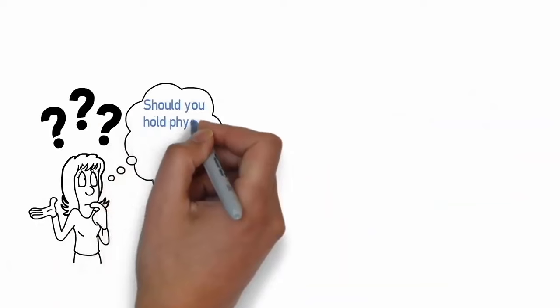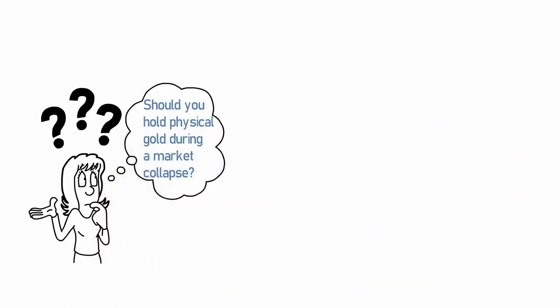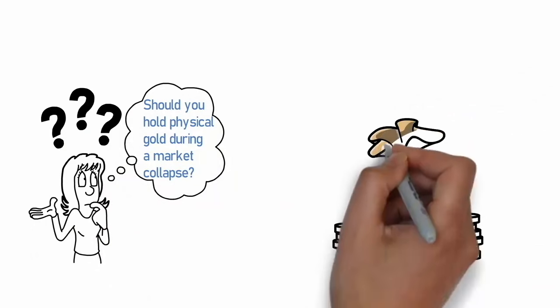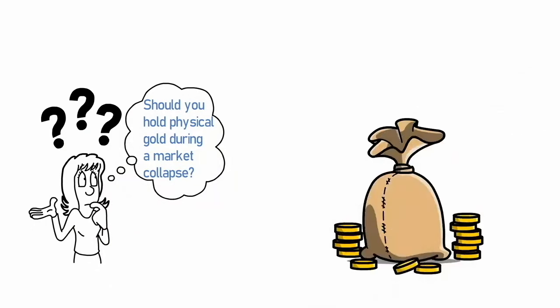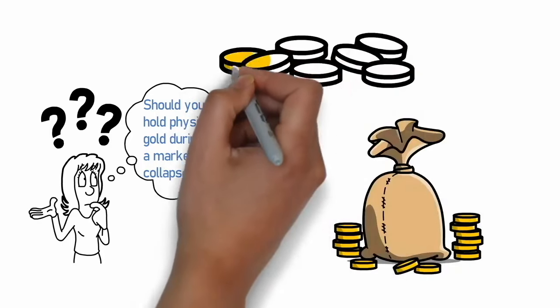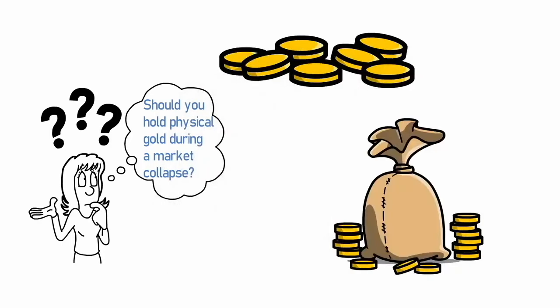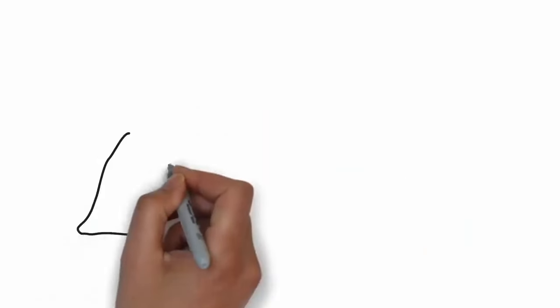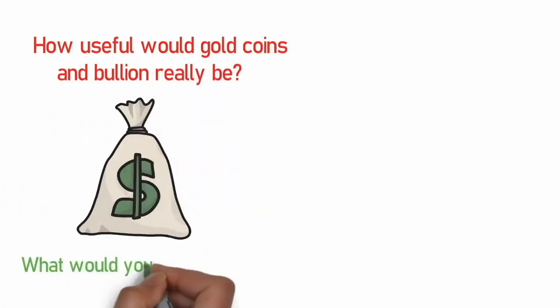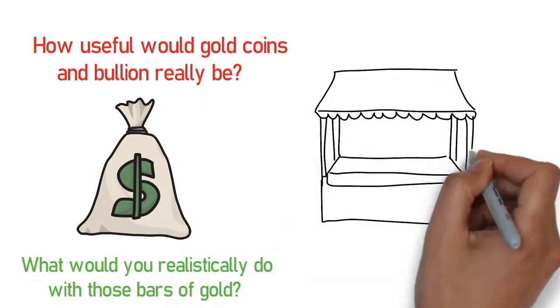But should you hold physical gold during a market collapse? Gold is seen as a safe place to store money thanks to its long history of being used as currency. Unlike fiat currency, gold can be traded across countries and cultures even in the case of a collapse of a market or a government. But if the US economy were to collapse, how useful would gold coins and bullion really be? What would you realistically do with those bars of gold? The market would not just pivot to precious metals.